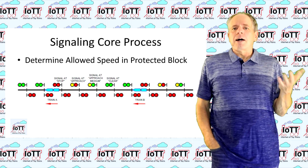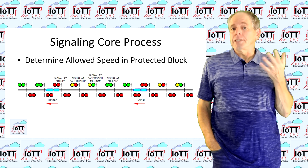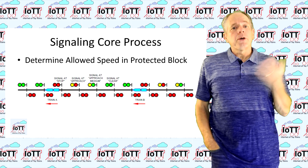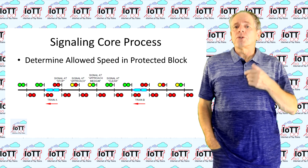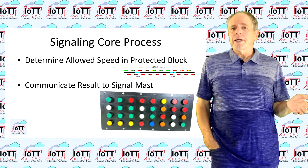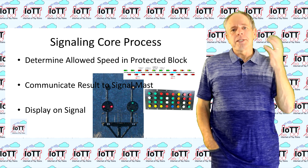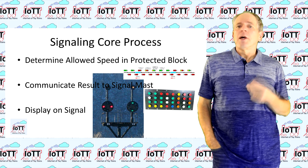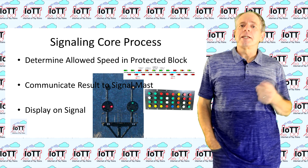In step 1, the allowed speed in the track section that is protected by the signal is determined based on defined parameters like occupancy status, turnout positions, and track characteristics like radius or grade. In step 2, the result is communicated to the signal, and in step 3, it is converted into a specific display — either lights, semaphore arm positions, or other means the conductor of an approaching train can easily recognize.